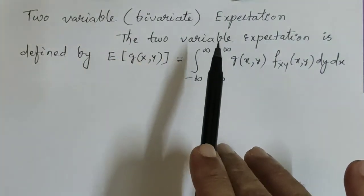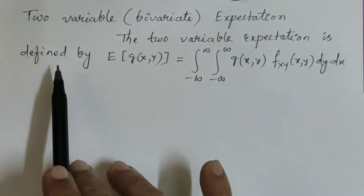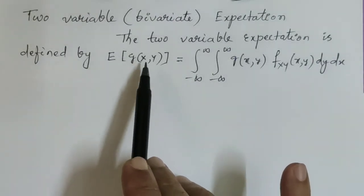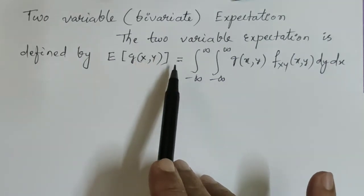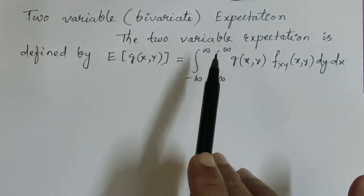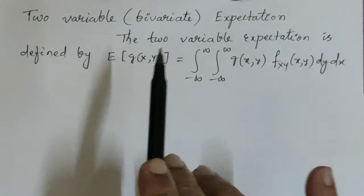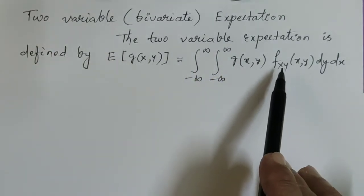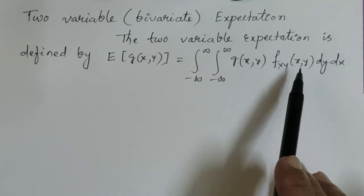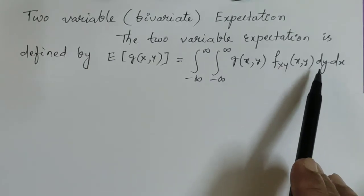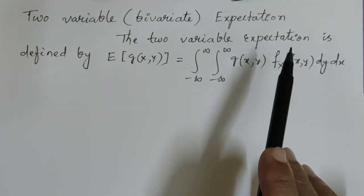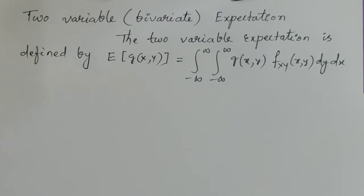The two-variable expectation is defined by the expected value of a function of two variables x and y, random variables, which is equal to the double integral from minus infinity to plus infinity of g(x, y) times the joint probability density function f_{XY}(x, y) dy dx. This is the definition of expectation for two random variables.